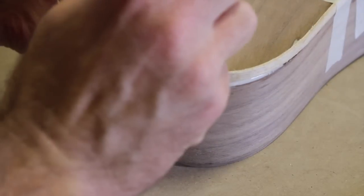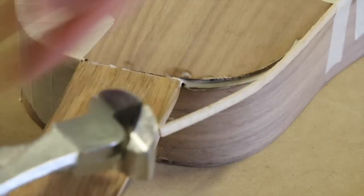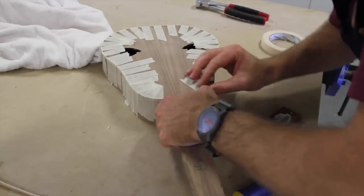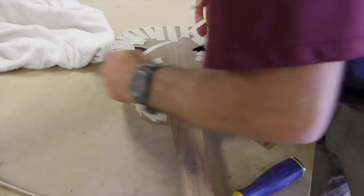When you're almost all the way around, mark out where the end of the binding needs to be and remove the excess material. Finish off the gluing and taping, and you can leave it to dry for a few hours.